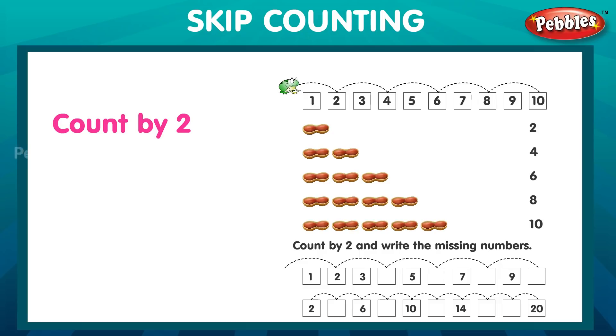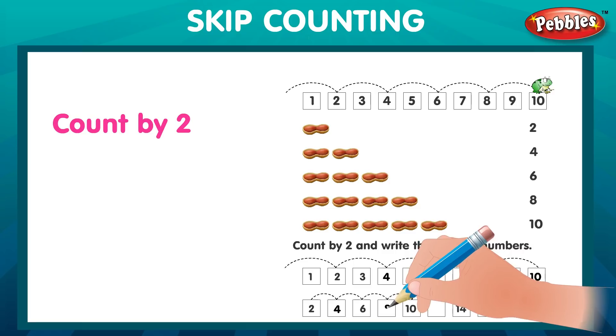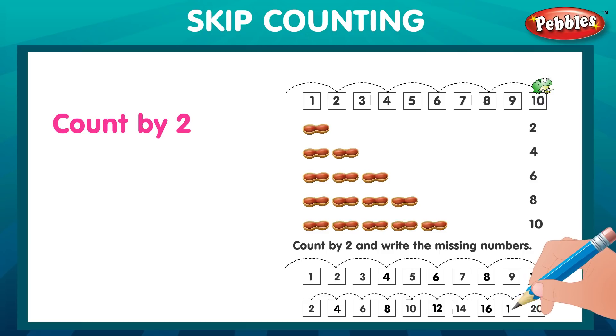Skip counting. Count by two. Two. Four. Six. Eight. Ten. Count by two and write the missing numbers. Four. Six. Eight. Ten. Four. Eight. Sixteen. Eighteen.